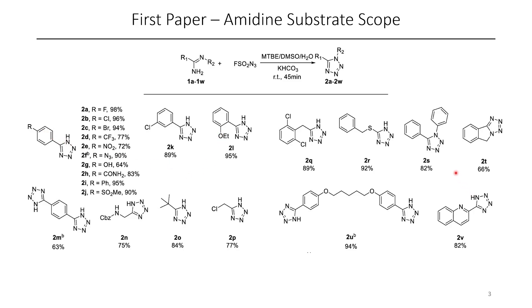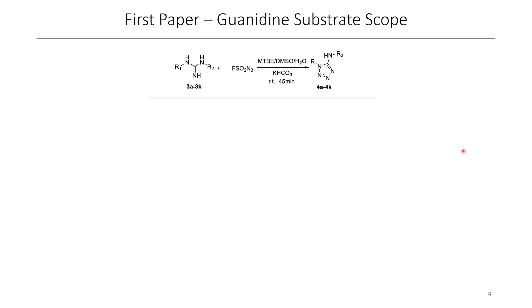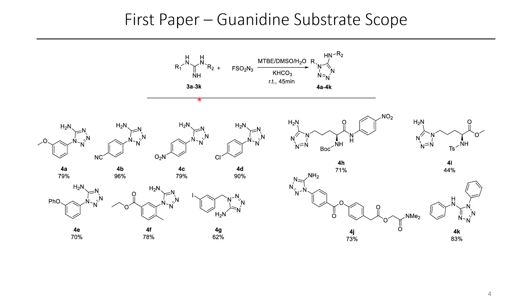Not only were unsubstituted tetrazoles synthetically accessible, but the authors were also able to make an N-phenyl tetrazole, and in this case a bicyclic tetrazole. In addition to the amidines, the authors were able to use guanidines as well to make amino tetrazoles.